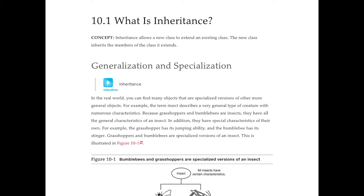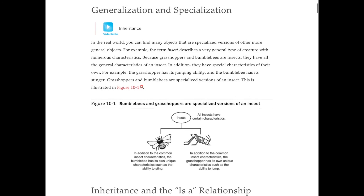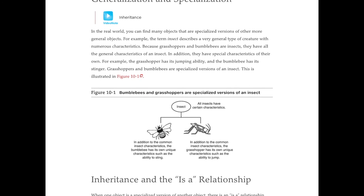Before we get really deep into that, it's important to think about the separation between generalization and specialization in the way we think about making our developments. The example here: insects versus a bee or a grasshopper. An insect is the superclass — it's that abstract thing that you know you're looking at when you see a bee or a worm or a grasshopper. But those are subclasses of the bigger insect class.